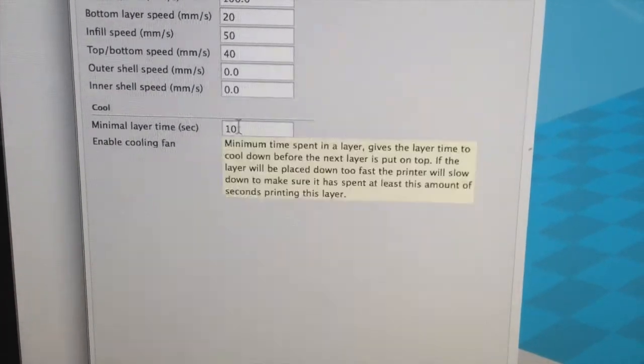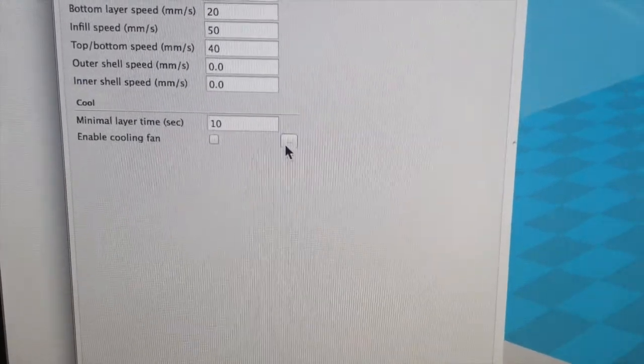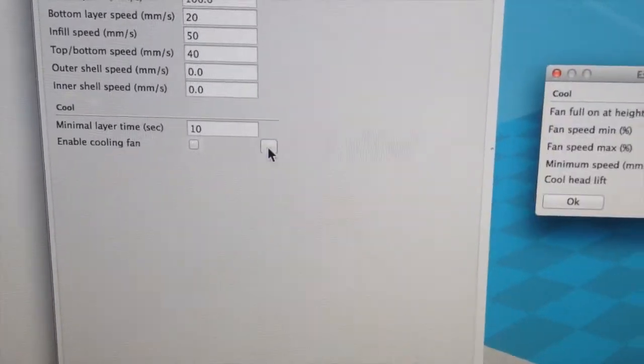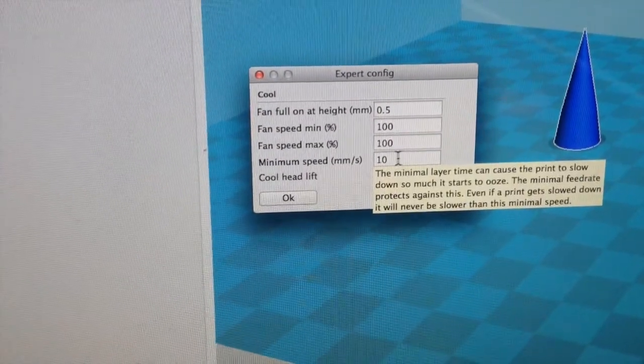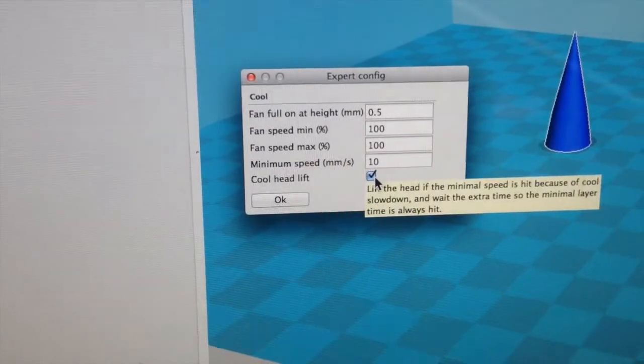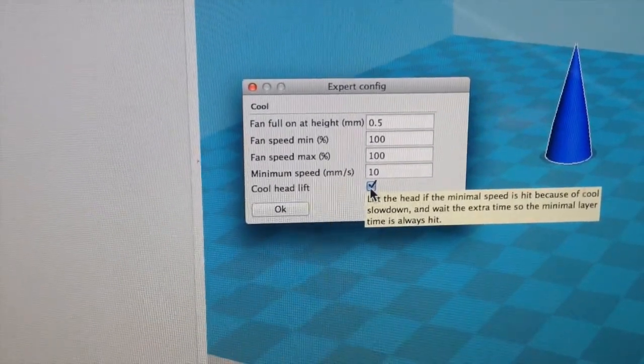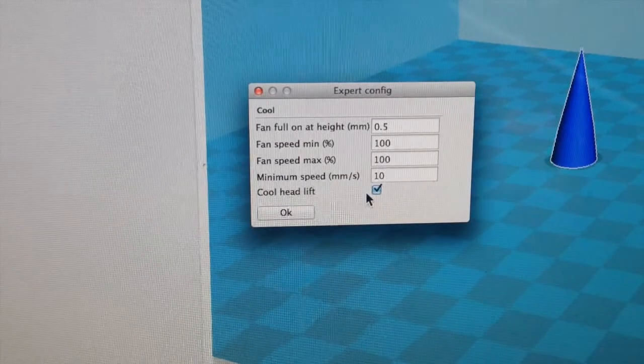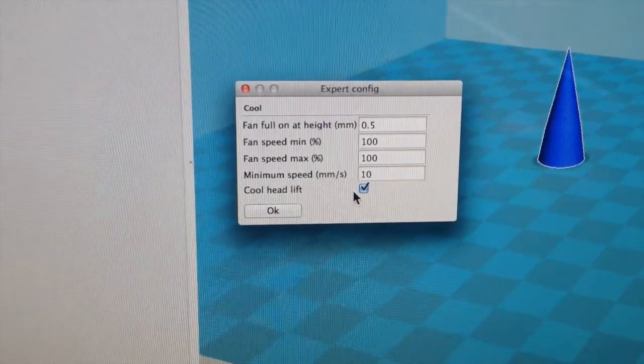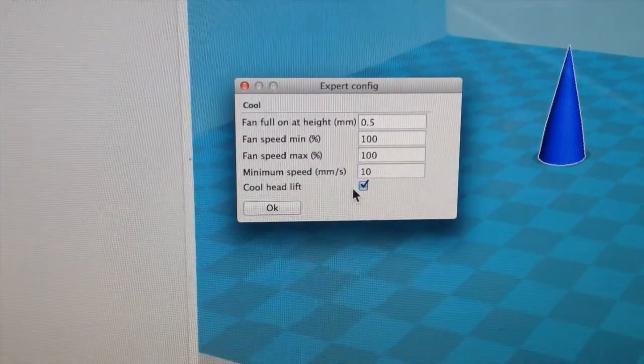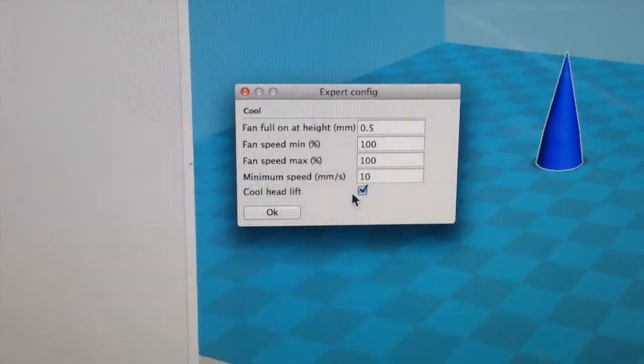In Cura, there is this little one here, which you normally wouldn't use on ABS. But if you click this, make sure you've got it to 10 seconds, and lifting the head, what it does is, if it takes longer than or shorter than 10 seconds, it will lift the head, pull it away, wait until your 10 seconds is up, and then print again.